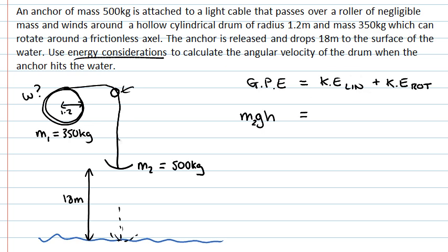And for our kinetic energy that's the linear component, again, that's the anchor dropping down. So it's the anchor that's moving at the bottom. So that will be half M2 times velocity squared.